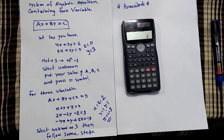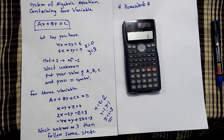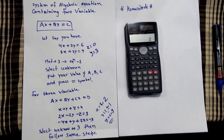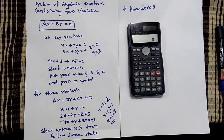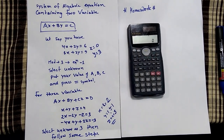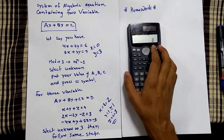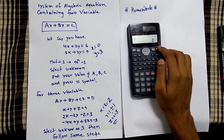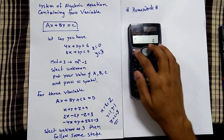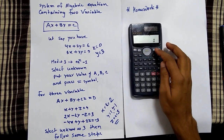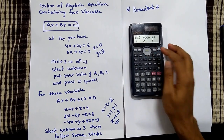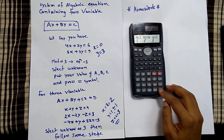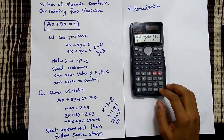Today we are going to see systems of algebraic equations containing 2 variables, and then we'll see 3 variables. Let's get started. First of all, clear your calculator — press 3.